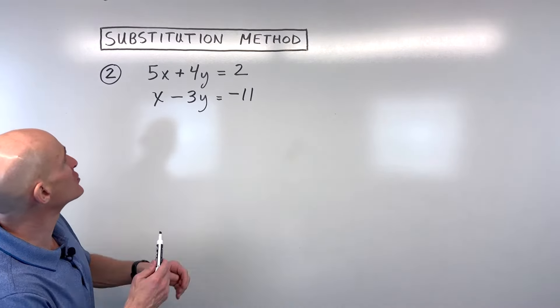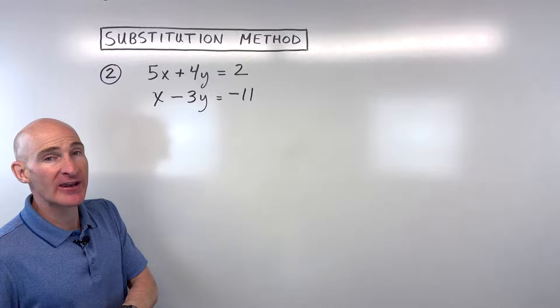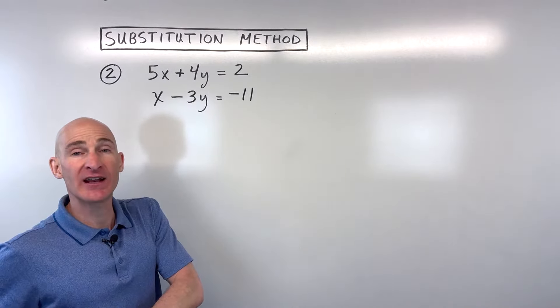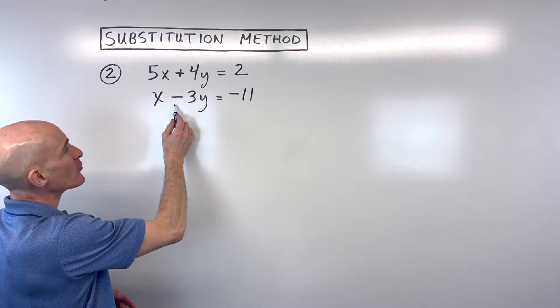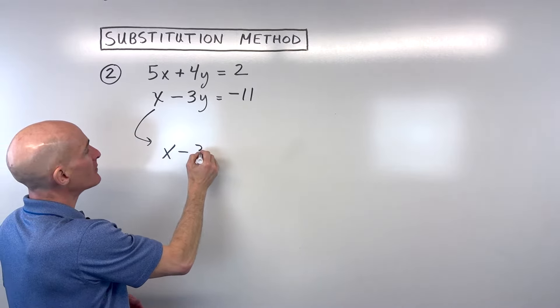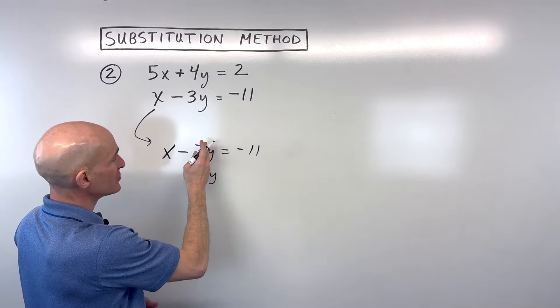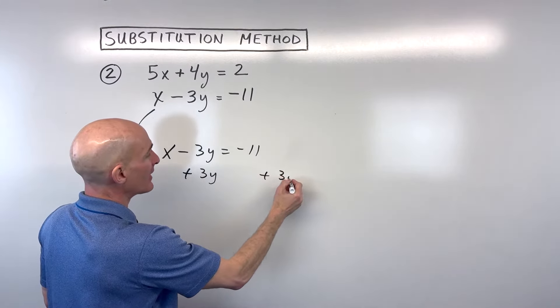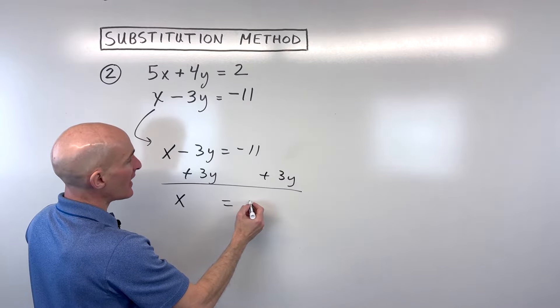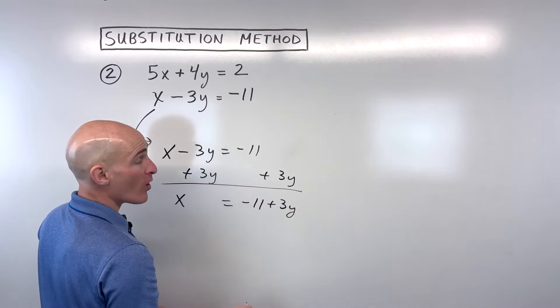Now, if I was going to do this problem, again, I would follow that same strategy of looking for a variable that's easy to isolate, meaning get it by itself on one side of the equation. So in this case, I can see this one's probably going to be the easiest. We just have 1x. So let's go ahead and rearrange this equation here, and we're going to do that by adding 3y to both sides. So if I add 3y here to eliminate it on the left, I have to add it to the other side, again, to keep this equation balanced. So we get x equals negative 11 plus 3y.